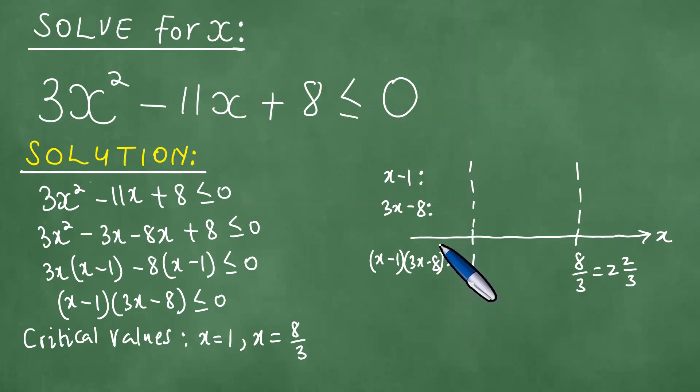To the left of 1, any numbers smaller than 1 like 0. Put 0 here, 0 minus 1 is minus. Put 0 here, 3 times 0 minus 8 is minus. Then when you multiply the two, you get a plus.